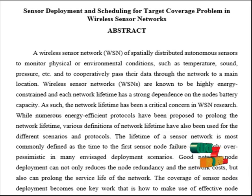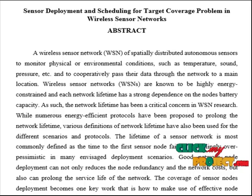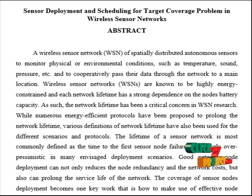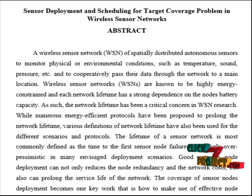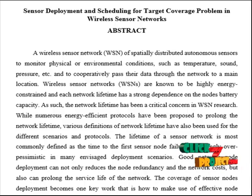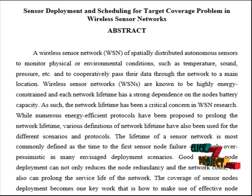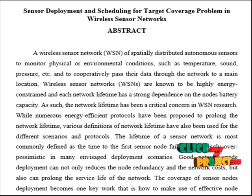In the PSO algorithm, initialize particle size and calculate the fitness value for each particle. Find the best fitness value for each particle, called the local best. Based on the local best, determine the global best value. Finally, update the velocity and new position of the particles. This process is repeated for the maximum number of iterations.